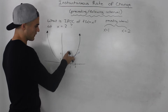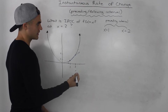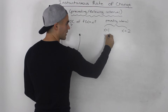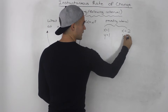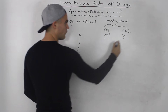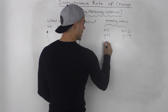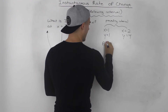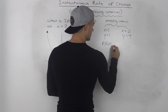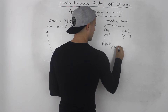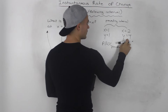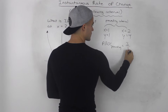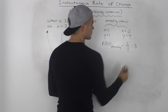Finding the average rate of change for the preceding interval: the y value at x = 1 is 1, and the y value at x = 2 is 4. So the average rate of change is (y₂ - y₁) / (x₂ - x₁) = (4 - 1) / (2 - 1) = 3/1 = 3.